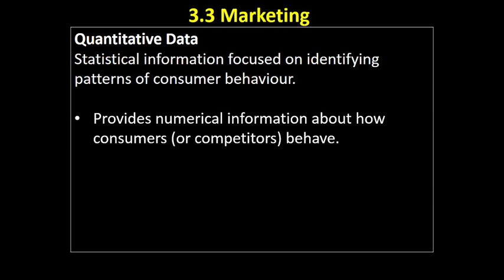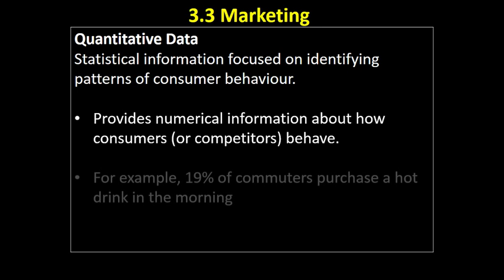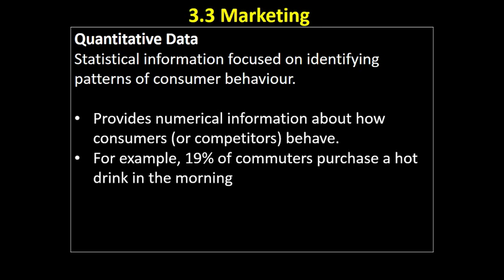Quantitative data provides numerical information about how consumers or even competitors behave. So an example would be: 19% of commuters purchase a hot drink in the morning. You might also look at the accounts of your rivals, which would provide some quantitative data — what are their costs of sales from their income statement, what are they spending their money on? So it's not just consumers; it could also be looking at competitors too.